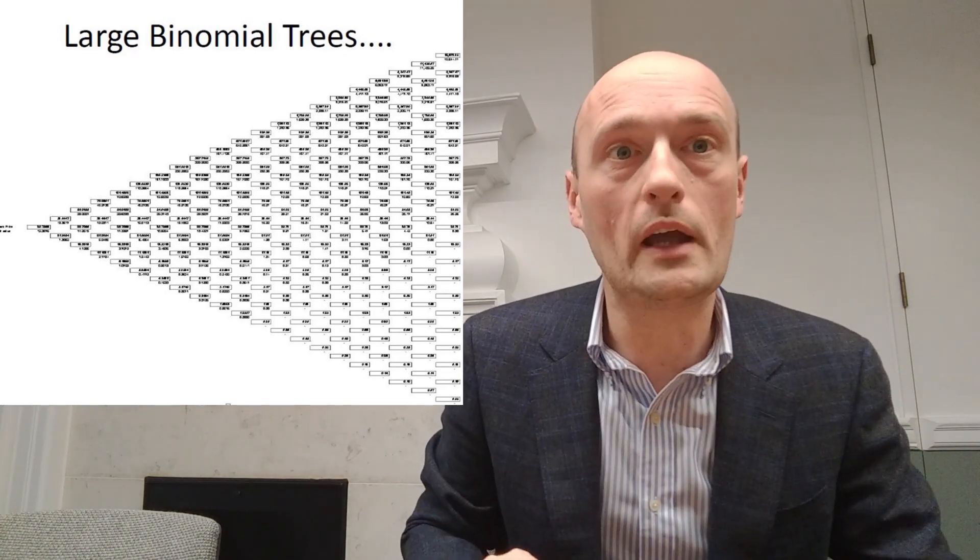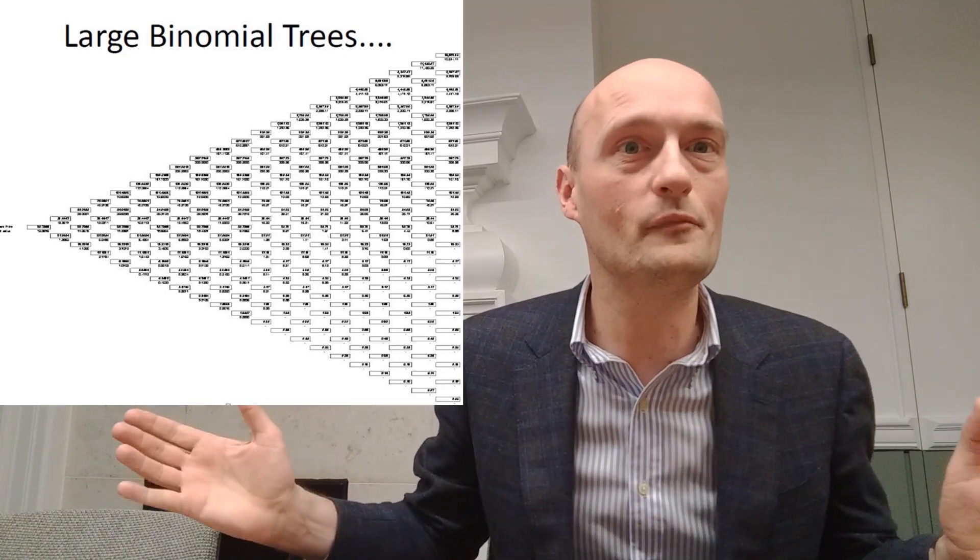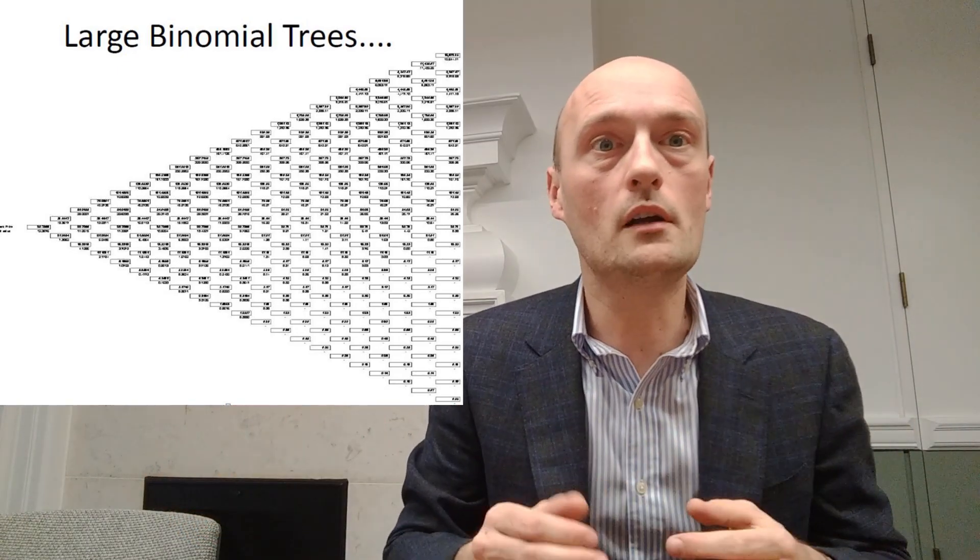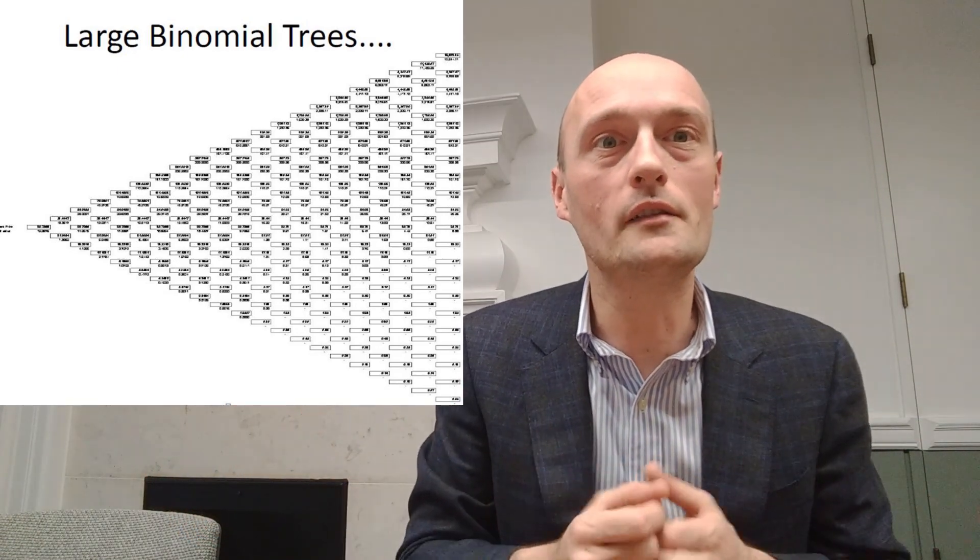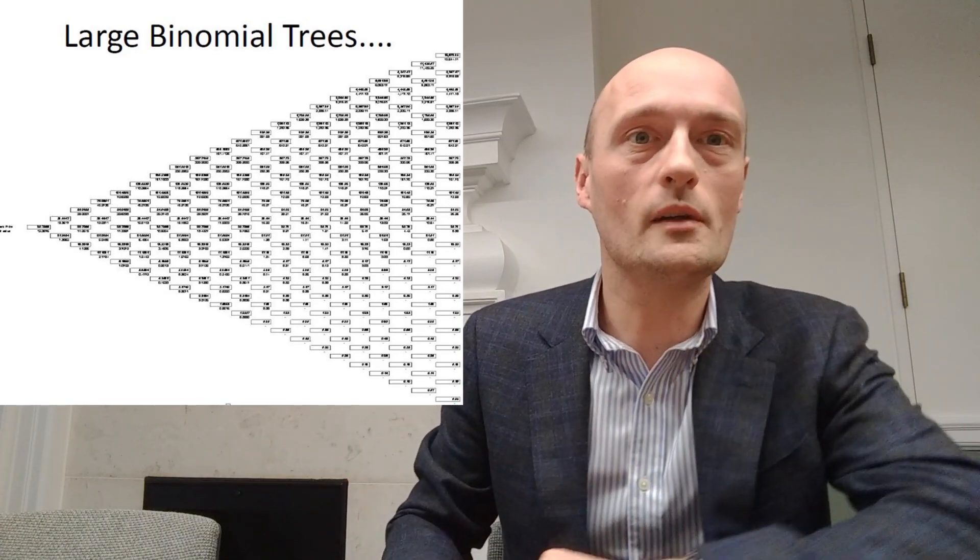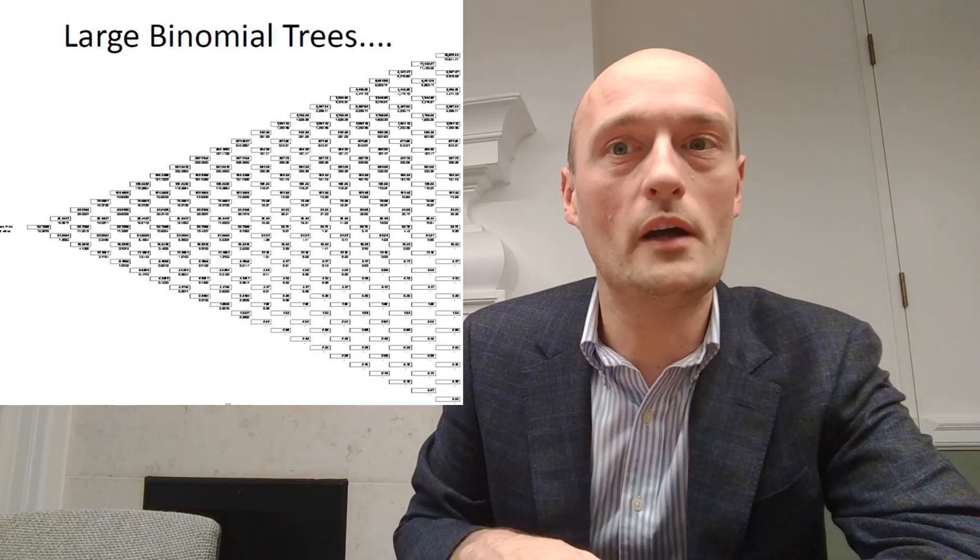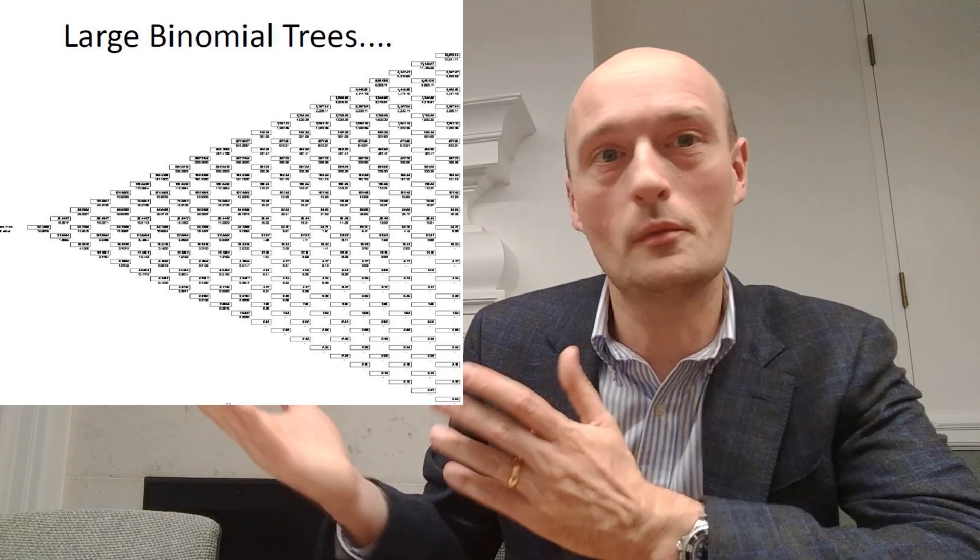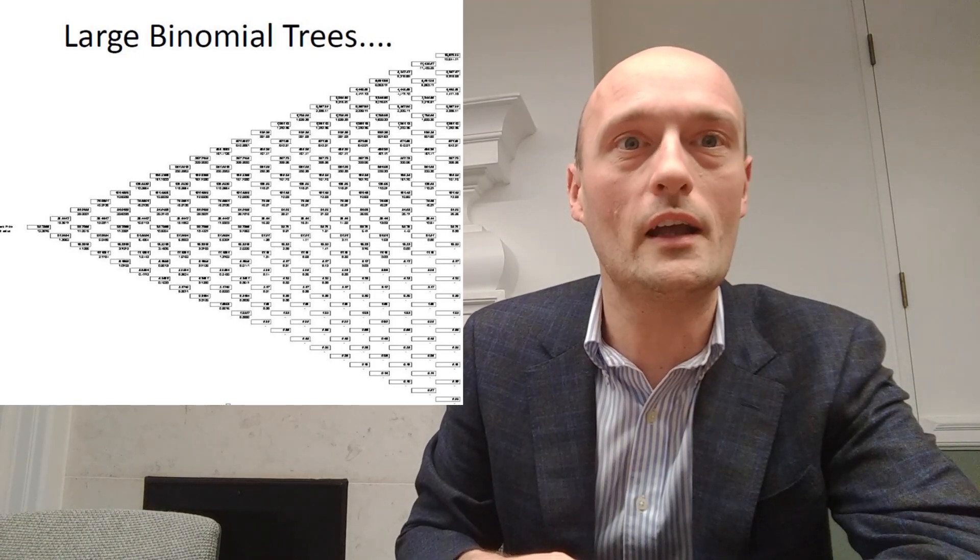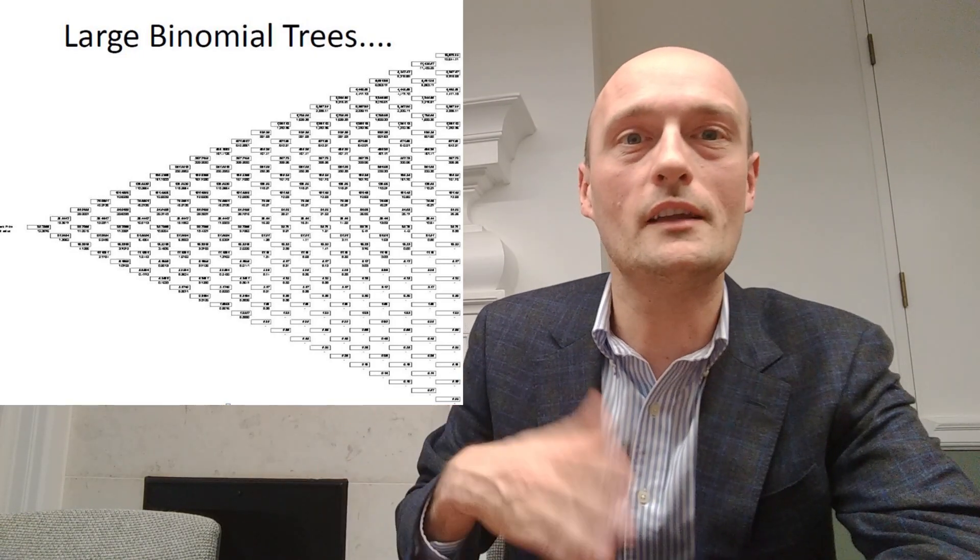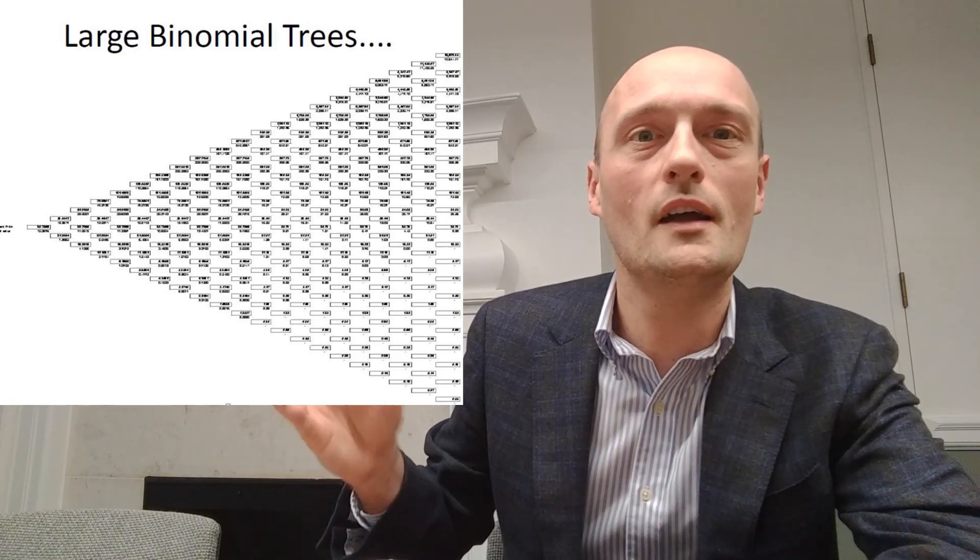Now, you're not going to sit down with a pen and paper and calculate a massive binomial tree with a thousand steps. But luckily, computers are good at that. So you can either build a spreadsheet or you can code something up in, we'll say, C++ to build as many steps to a binomial tree as you want to do. And just the more steps you build, the more time it takes to do the calculation. You'll also find that after a certain number of steps, it doesn't necessarily refine the price an awful lot more. So you don't have to build 10 million steps to a binomial tree.